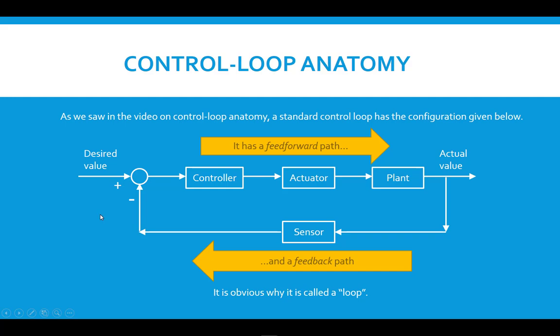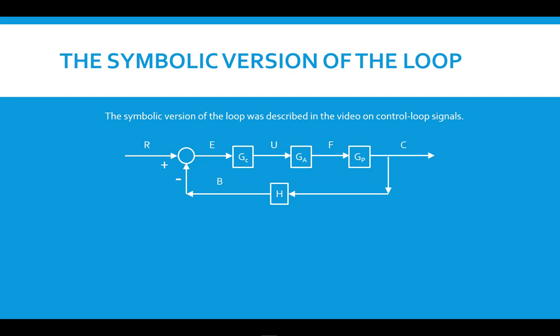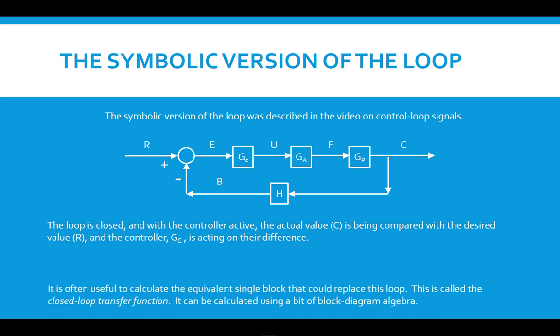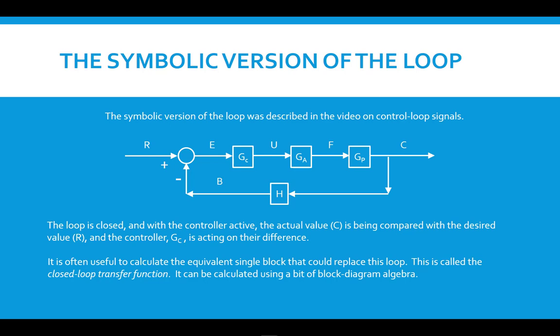It's obvious why this is called a loop. To be able to talk about the closed loop transfer function, we will go to the symbolic representation of the control loop. Here we've replaced the names with actual variables, and then also the signal names in the blocks, and the signal names with their variable representation also. So with the loop closed, the actual value, which is C, is being fed back and compared with the desired value R, and then the controller acts on that difference. It's often useful to be able to replace this entire loop with one single block that is called a closed loop transfer function, and the means for doing that is to use a little bit of block diagram algebra.